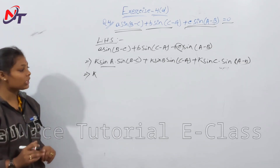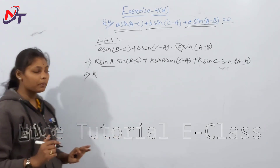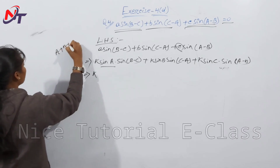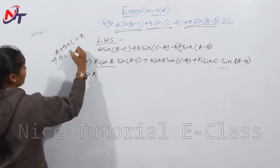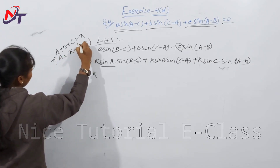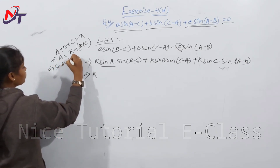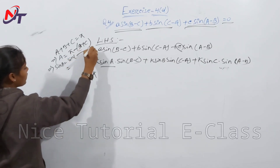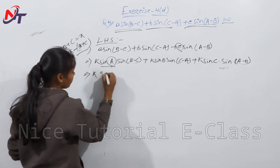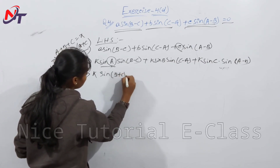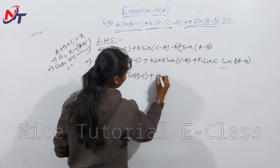In triangle FBC, we have A + B + C = π. Therefore A = π − (B + C), and so sin A = sin(π − (B + C)) = sin(B + C). We substitute sin A with sin(B + C).